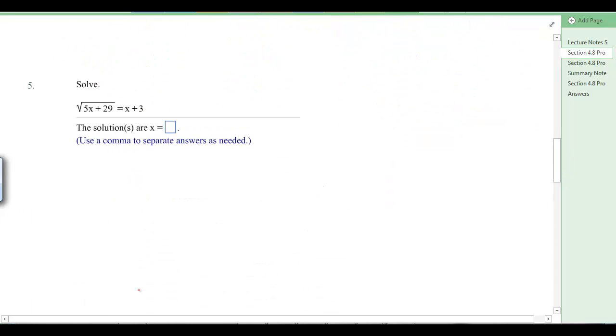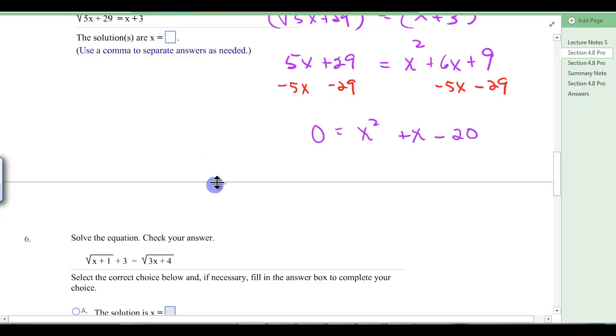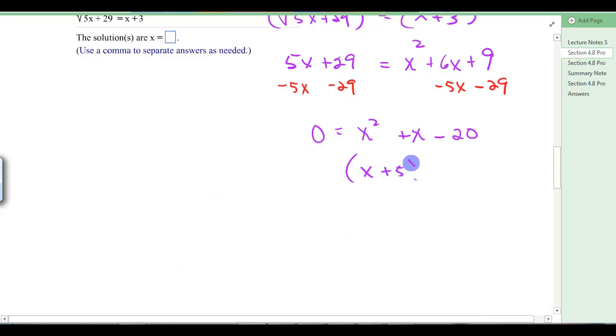Let's try number 5. Same idea. We're going to square both of these. So over here, we end up with 5x plus 29. And over here, we have x squared plus 6x plus 9. And we're going to subtract here and here.